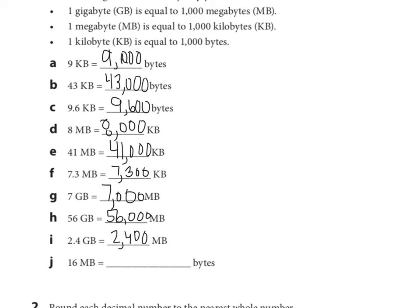And then, 16 megabytes equals how many bytes? This is a little tricky one — we're going from megabytes to bytes. Here we see 1 megabyte is 1,000 kilobytes, and 1 kilobyte is 1,000 bytes. So, we need to multiply by 1,000 and then by 1,000 again. What is 1,000 multiplied by 1,000? That's right, 1,000,000, because there are going to be six zeros. So, 16 times 1,000,000 would be 16,000,000 bytes. That's the correct answer.